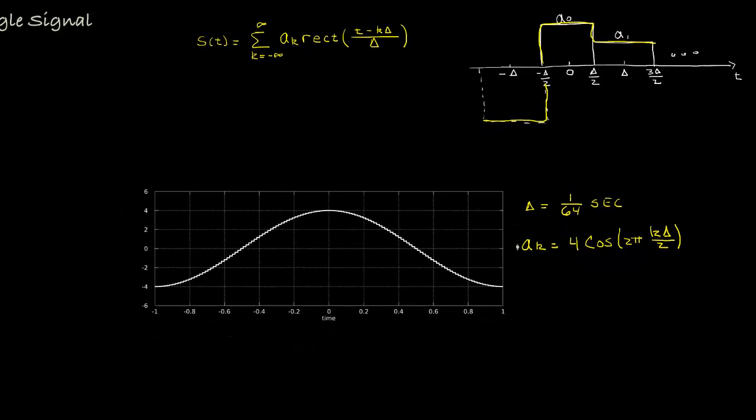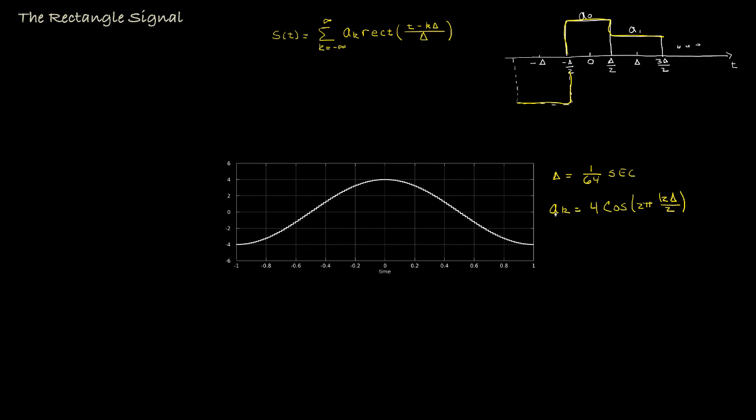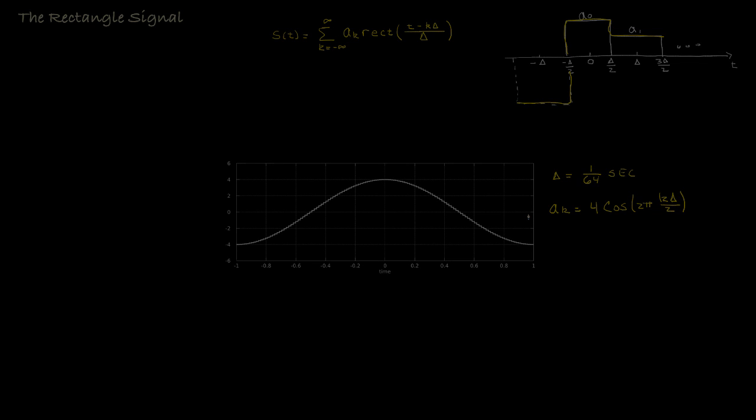So the rectangle is a very simple signal, but through scaling, shifting, and superposition, we can use it as a window for signal analysis and as a building block for approximating more complicated signals. So there you have it. That's the rectangle signal. Thank you.